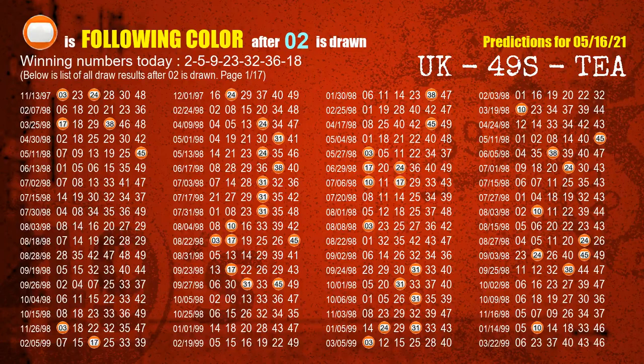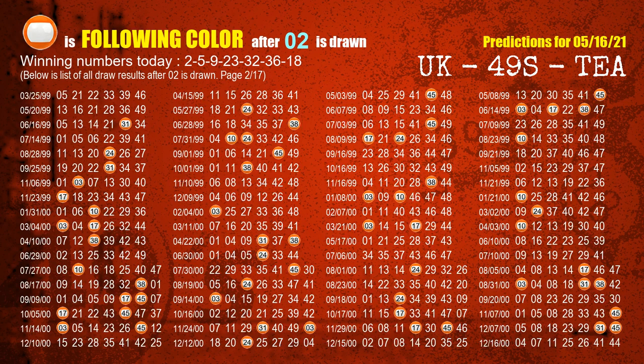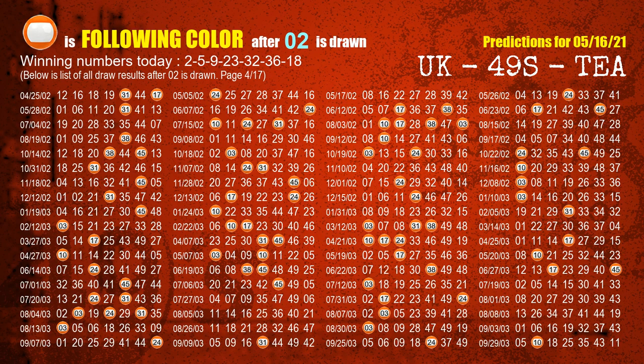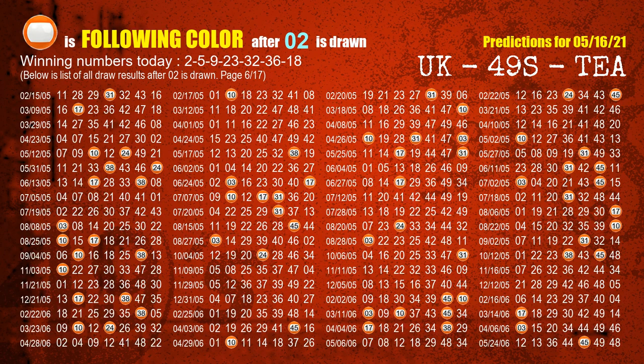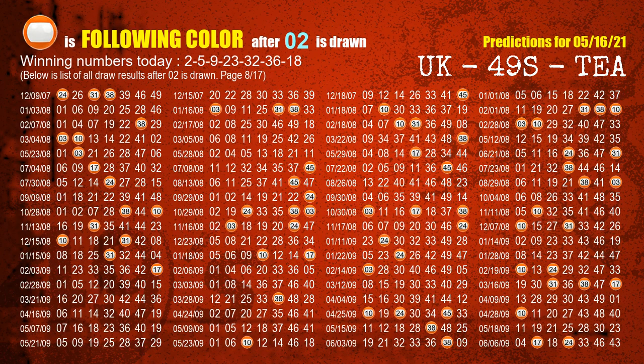Besides following ones, we need more clues for winning numbers of next draw, so we will find out the most drawn ball color through today's result. Following ball colors refer to the color of those numbers being picked on the next draw after this one. The first winning number is 02 — the most frequently following color is orange. The second winning number is 05 — the most frequently following color is yellow.